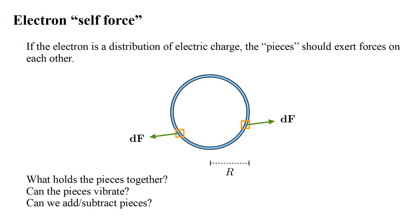The modern response to these types of questions seems to have been first put forward by Frenkel in 1925. The electron is elementary and has no substructure.